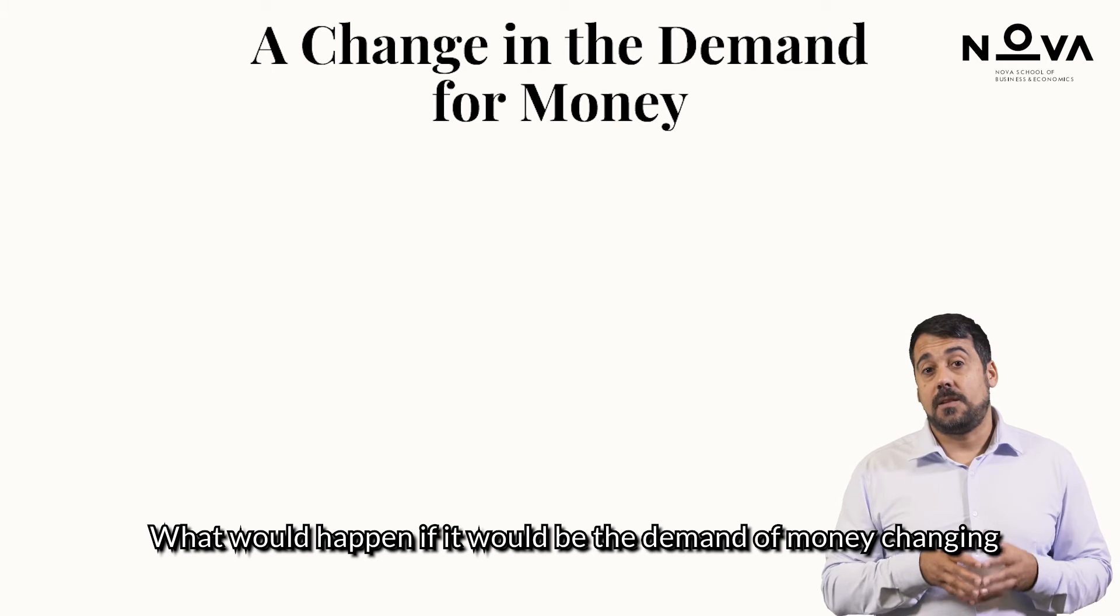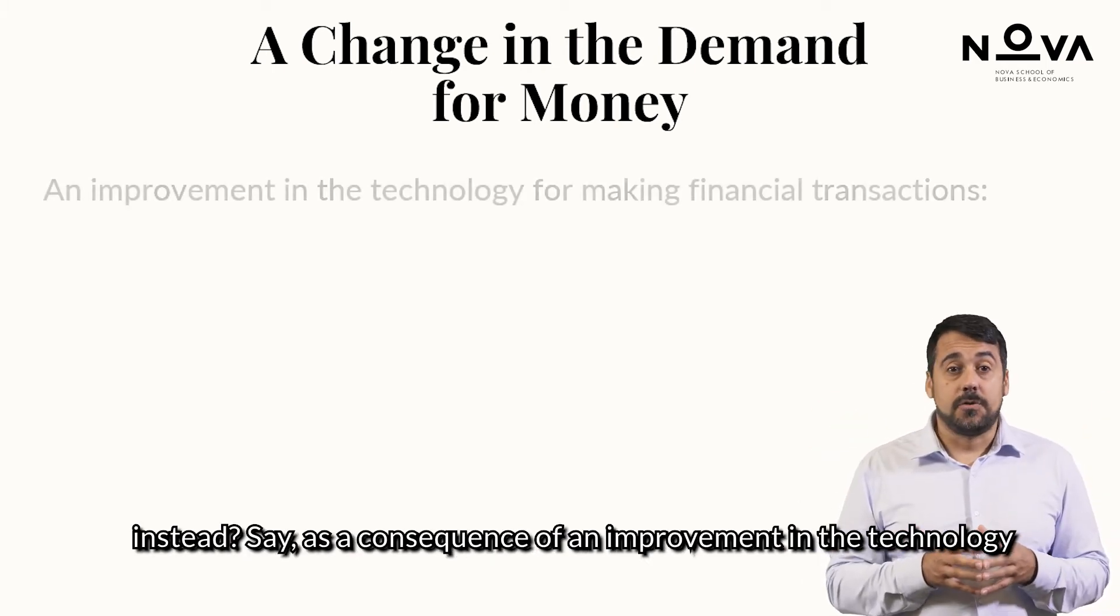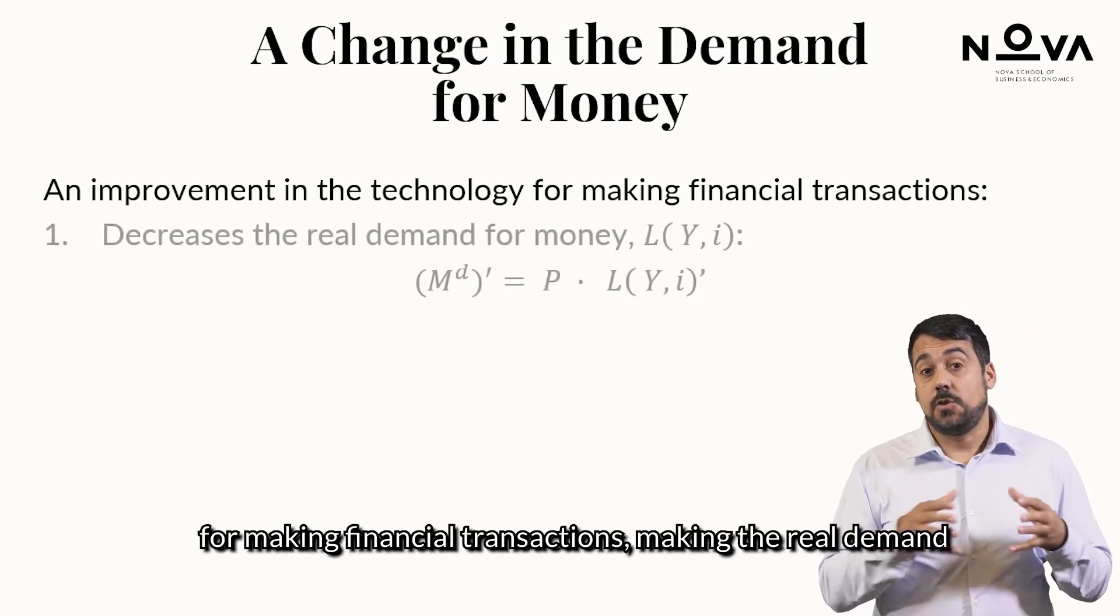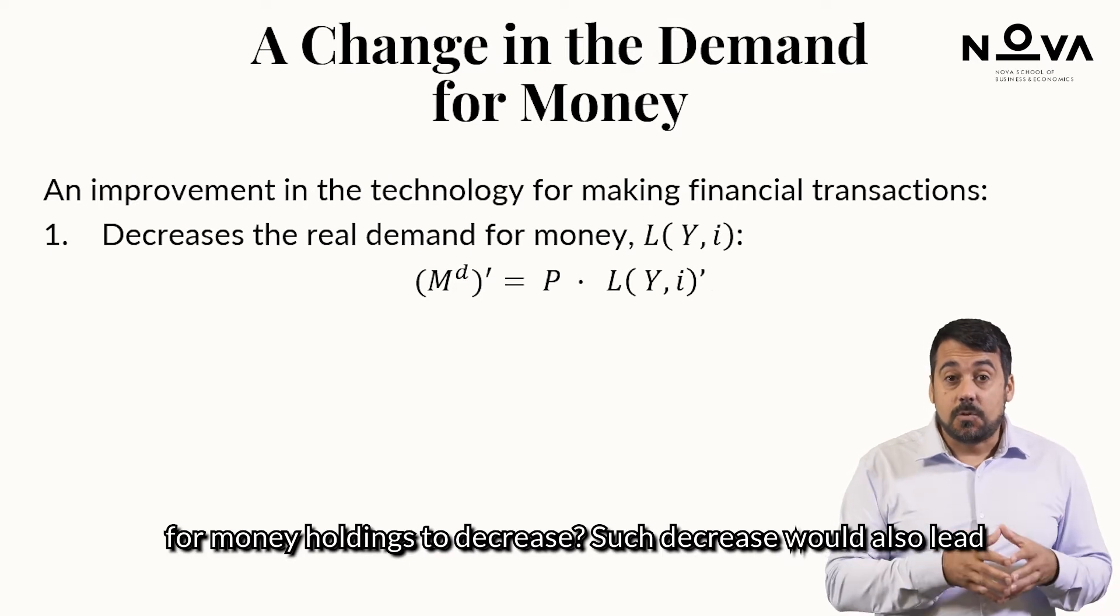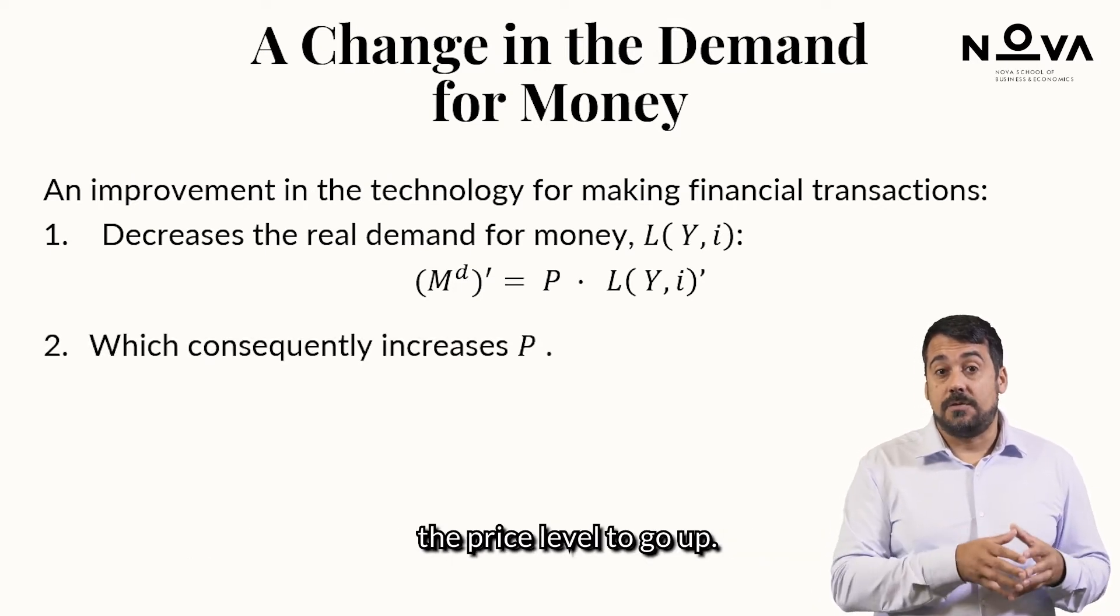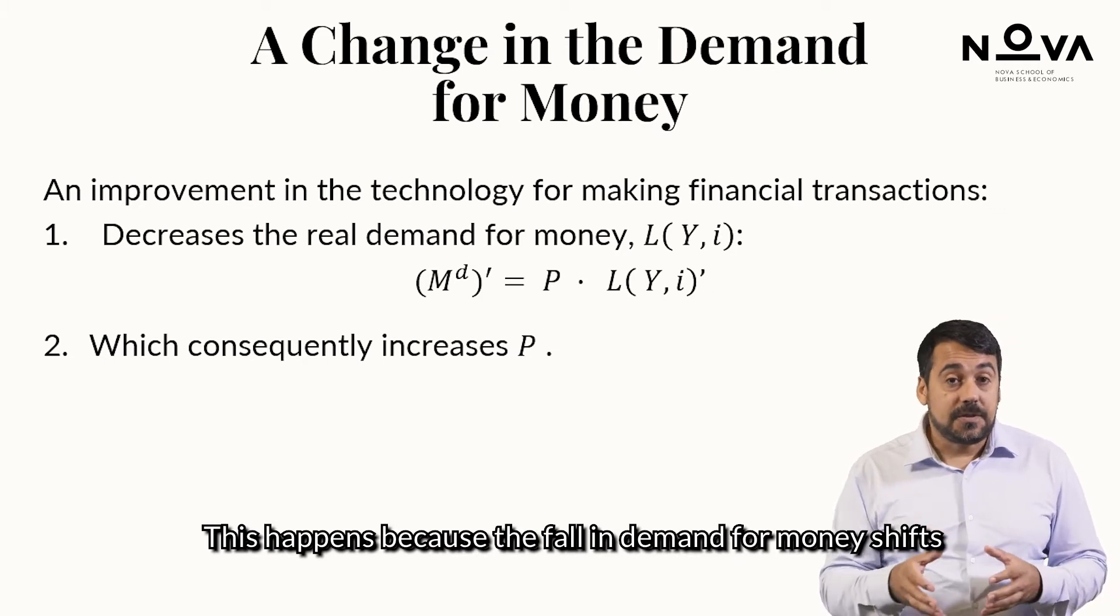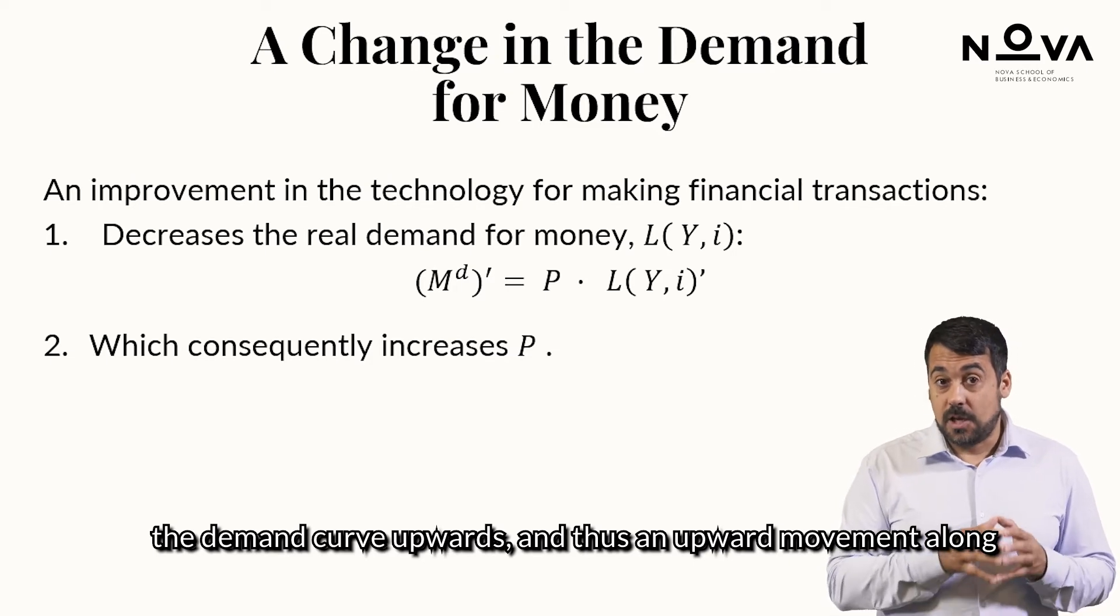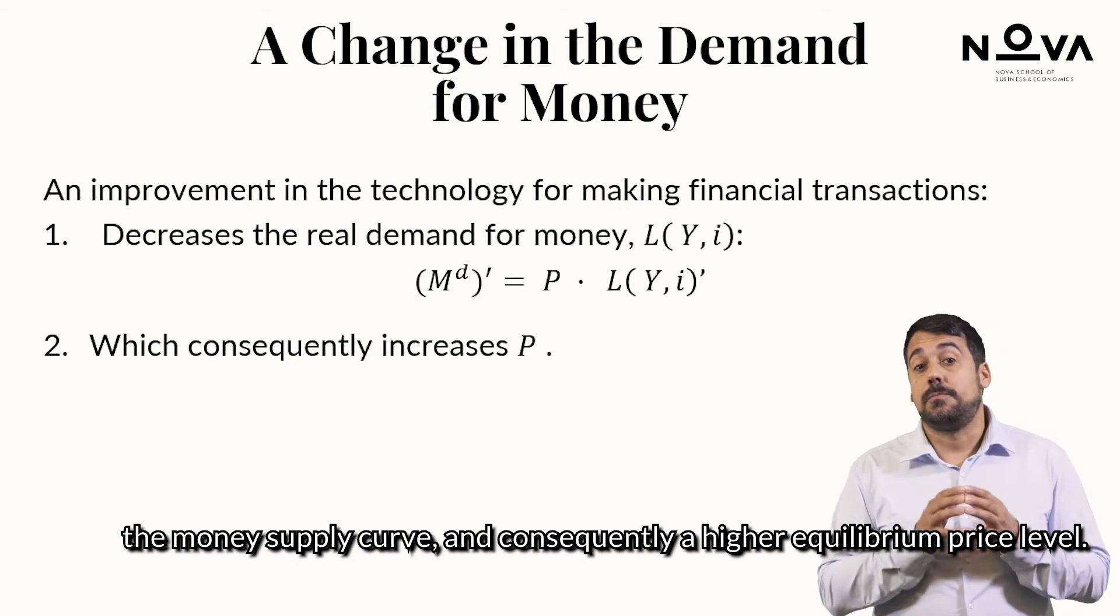What would happen if it would be the demand of money changing instead, say, as a consequence of an improvement in the technology for making financial transactions, making the real demand for money holdings to decrease? Such decrease would also lead the price level to go up. This happens because the fall in demand for money shifts the demand curve upwards, and thus, an upward movement along the money supply curve, and consequently, a higher equilibrium price level.